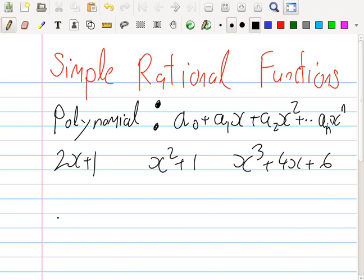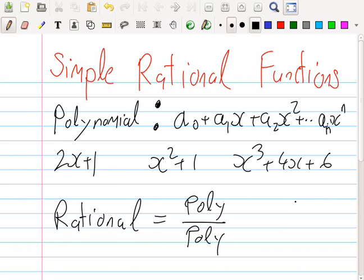What is a rational function? A rational function is just equal to a polynomial divided by a polynomial. For example, 4x squared plus 1 divided by x cubed. That's a simple rational function.